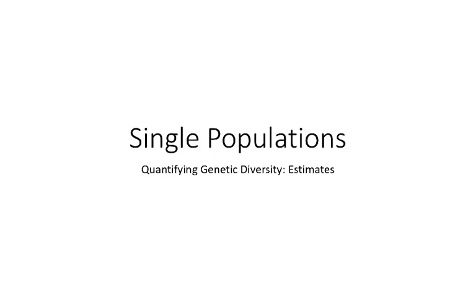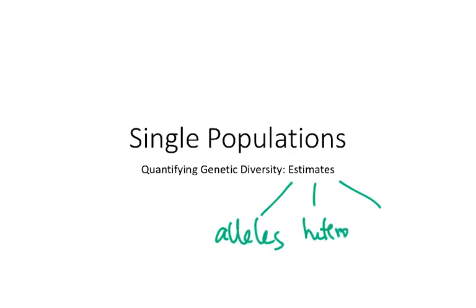In this video we will talk about the different ways that molecular ecologists use to actually quantify genetic diversity. We'll talk about three main ways to do this based on either alleles, on heterozygosity, and based on sequence divergence. In this video we'll cover each of the particular methods related to those general categories.